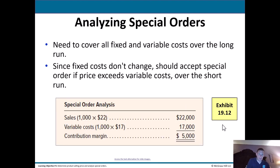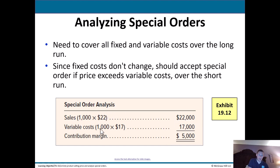Next is analyzing special orders. You need to cover all fixed and variable costs over the long run, but fixed costs don't change within the relevant range, so you should accept a special order if the price exceeds the variable costs in the short run. For example: 1,000 units at $22 generates $22,000 in revenue; variable costs are 1,000 × $17 = $17,000; so the contribution margin is $5,000 — meaning the company makes $22, costs $17, and walks away with $5 per unit.